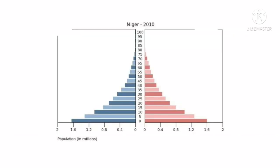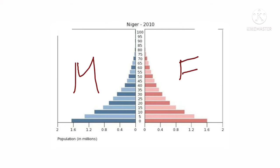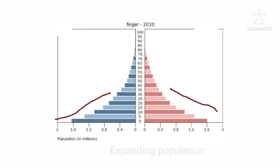Different countries' sex pyramids represent different stages of demographic composition. Here I am representing the pyramid of Nigeria 2010. The shape of Nigeria's pyramid is concave and shows a high birth rate. The left side shows males and the right side shows females.